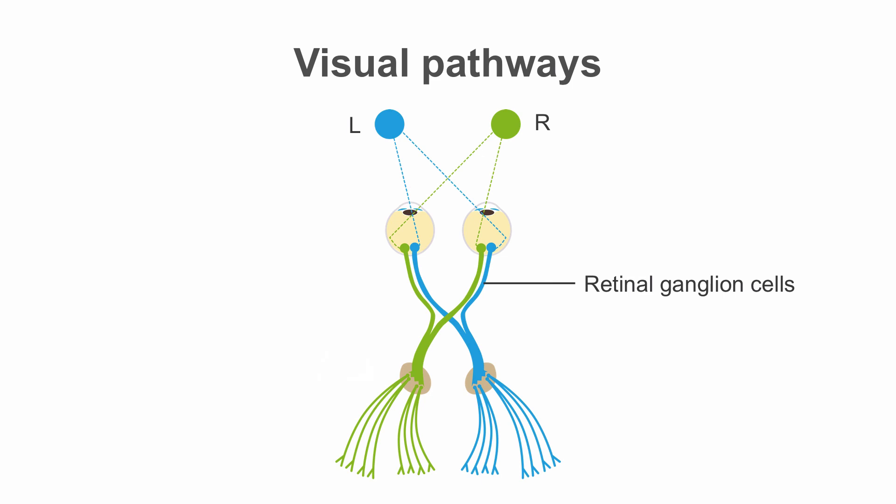The axons of these second-order neurons make up the optic nerves and travel to the chiasm, where the nasal fibers cross to the opposite lateral geniculate body and the temporal fibers remain ipsilaterally and terminate in the lateral geniculate body.